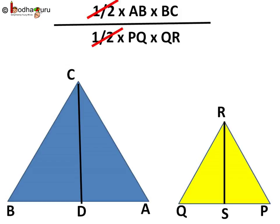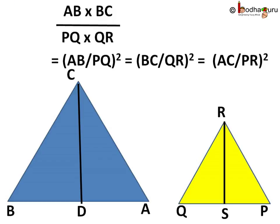Half and half gets cancelled, so ratio of area of two triangles comes out to be AB by PQ whole square is equal to BC by QR whole square is equal to AC by PR whole square.